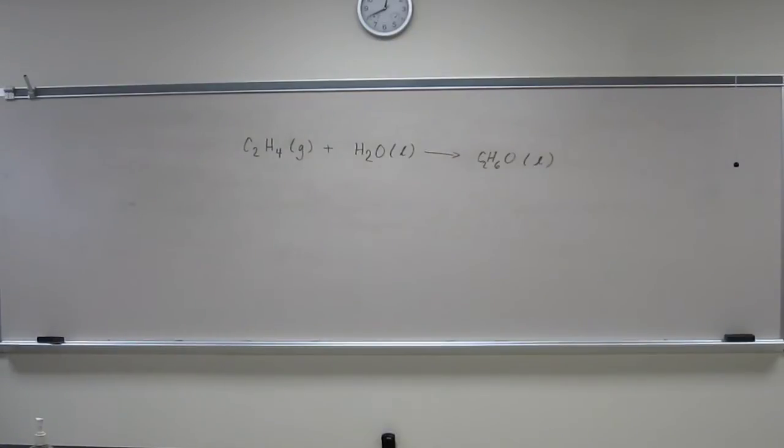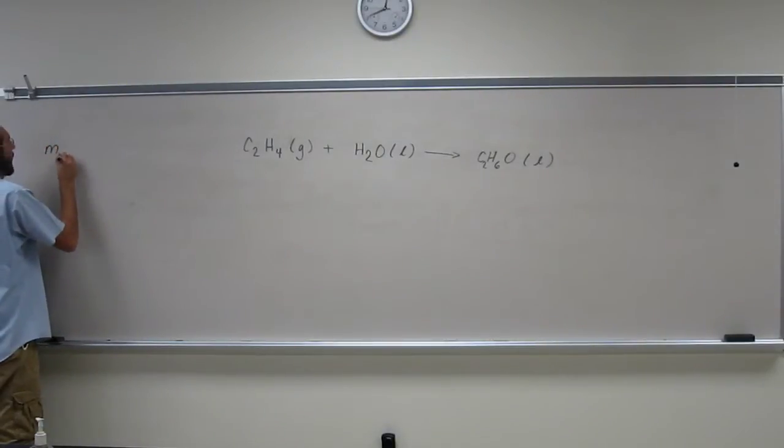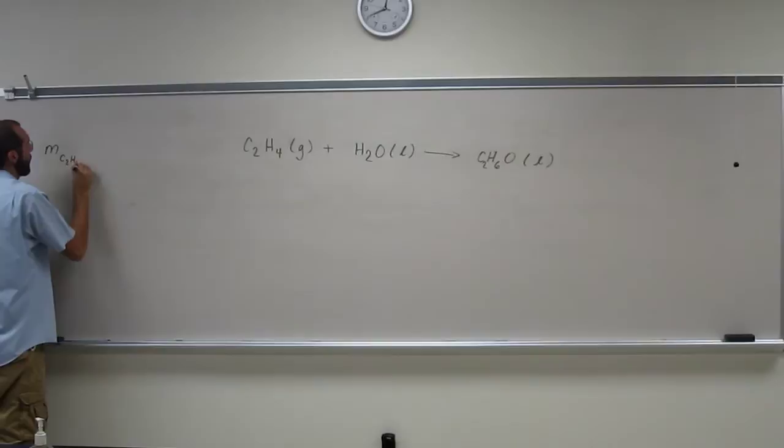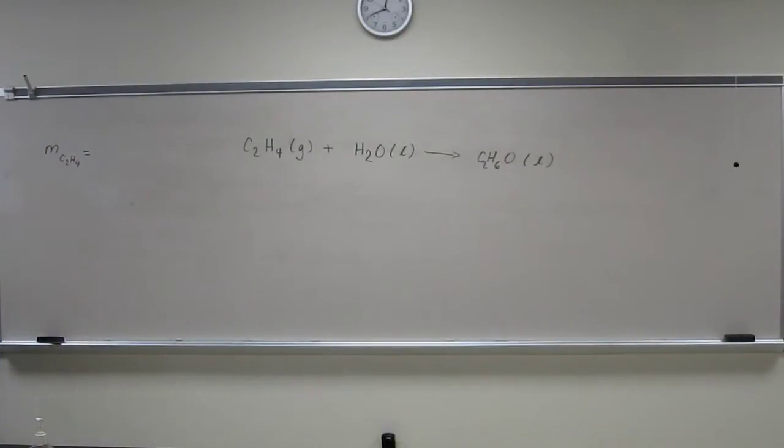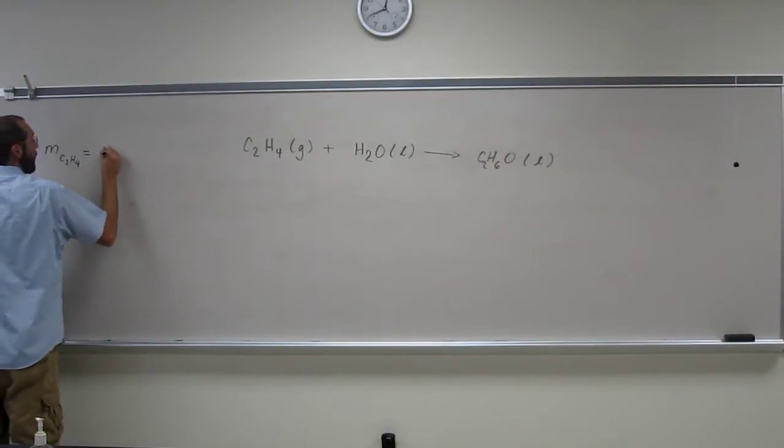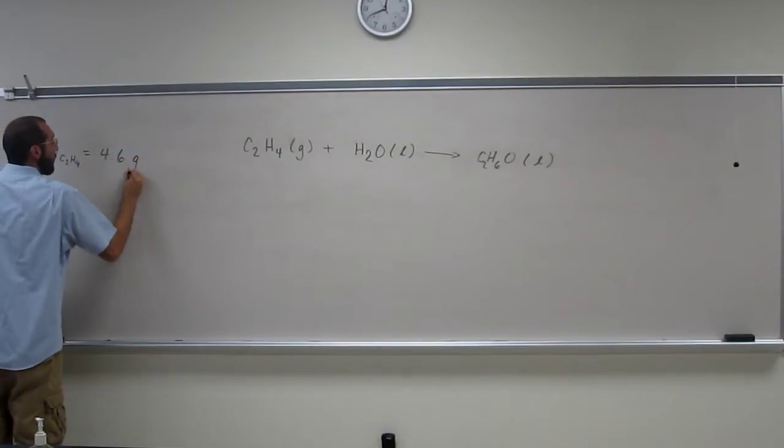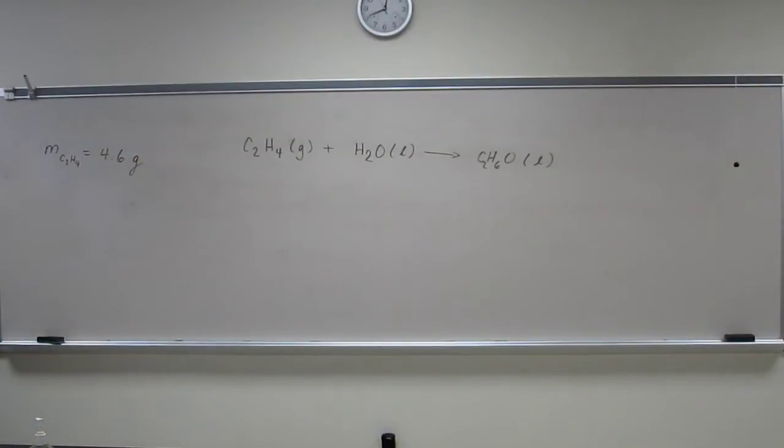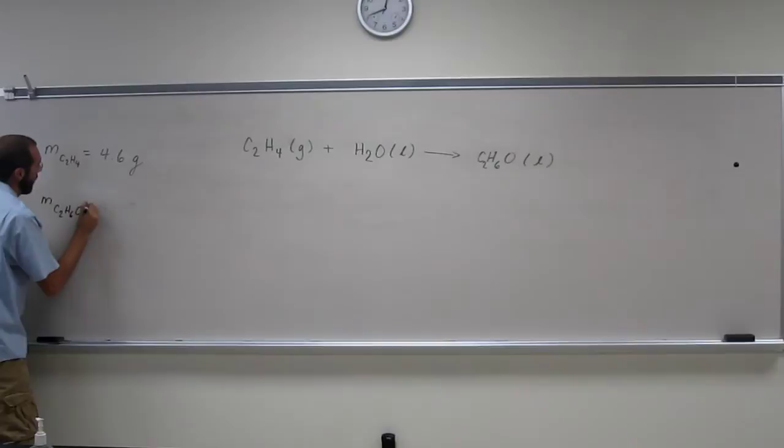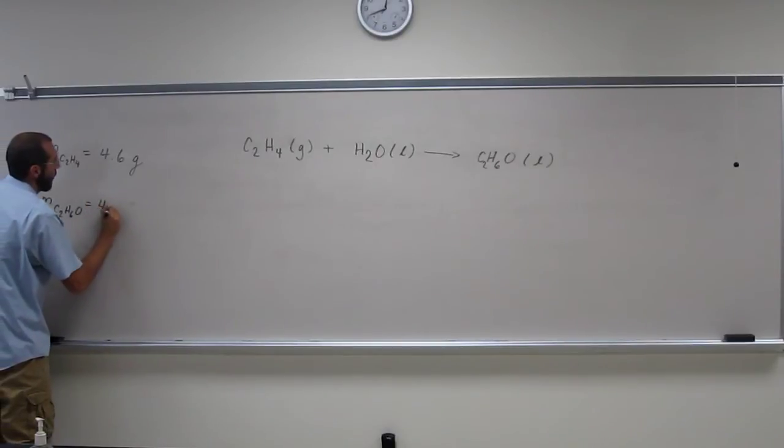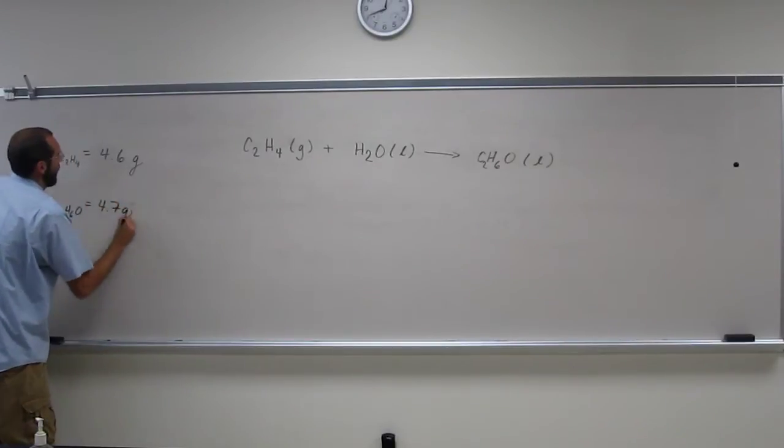It also gives us the mass of ethylene. So the mass of C2H4 equals 4.6 grams and it also gives us the mass of ethyl alcohol. That's 4.7 grams.